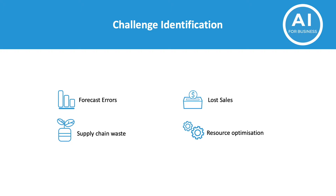Secondly, we have supply chain waste. Thirdly, lost sales, mainly due to products not being available. And lastly, resource optimization. These are the key problems that machine learning can tackle very well.